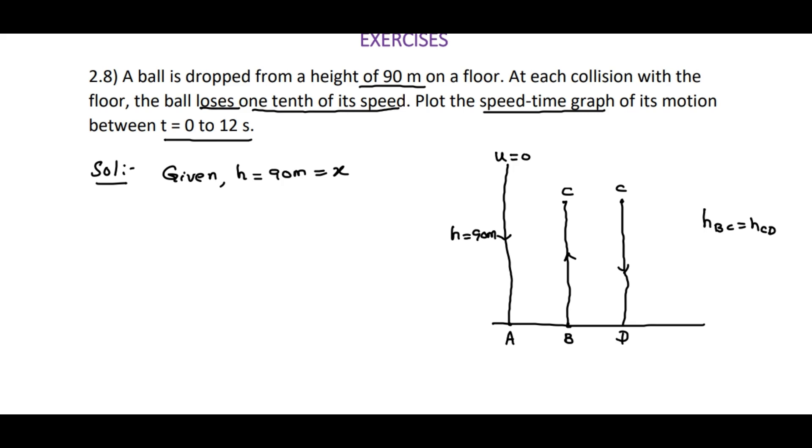Now, it is falling from 90 meters. We can use the equation to find how much time it takes to reach point A. S equals ut plus half at squared. Here, initial velocity is 0 plus half times 9.8 times t squared equals 90. From this, t equals square root of 2 times 90 divided by 9.8, which is nearly 4.3 seconds.